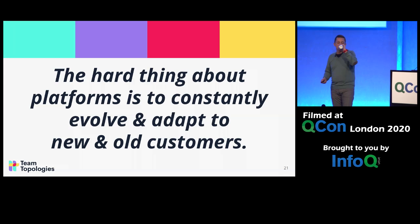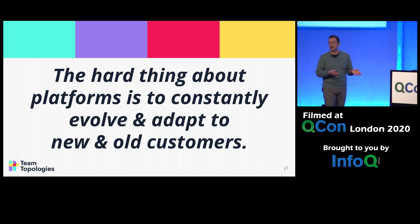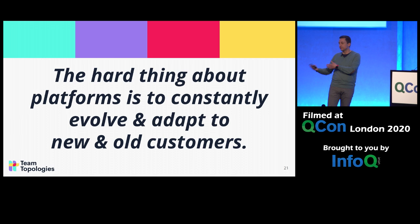One of the hard things about platforms is that the needs of the consumers are going to change over time. Teams using the platform are probably going to start having more specific requests and needs. At the same time, you're probably always going to have new teams or new engineers onboarding the platform, so it has to be understandable and usable for them. This changes all the time — it keeps evolving, as does the ecosystem of the technology, Kubernetes in this case.